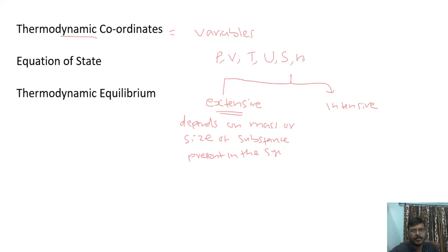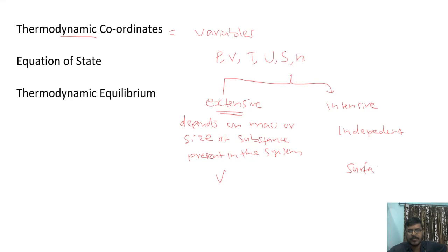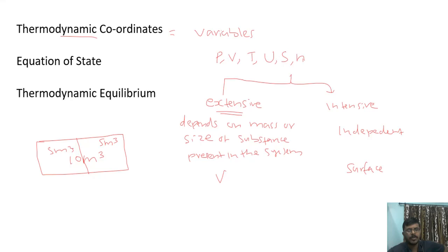Whereas intensive variables are independent of the mass or size of the substance present in the system. For example, volume is an extensive quantity whereas surface tension is an intensive quantity. If a system has a volume of 10 cubic meters and you divide it into two, each part will have 5 cubic meters — the volume changes. So volume depends on the size of the system, making it extensive.